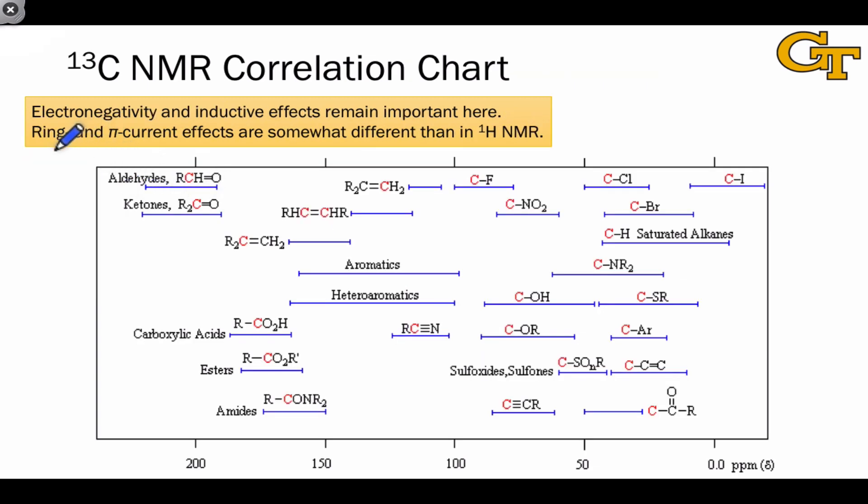As in the proton NMR correlation chart, in the carbon NMR correlation chart, the electronegativity of nearby atoms and atoms bound directly to the carbon is important, and inductive effects of nearby atoms are also important.